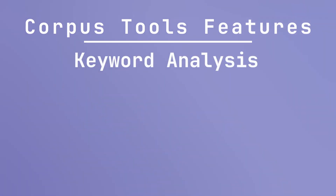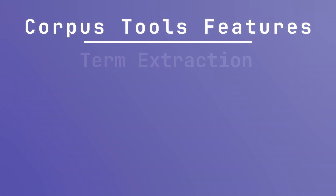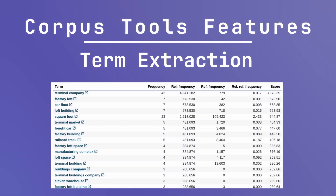Keyword analysis is useful for finding terms that are unusually frequent in a text compared to a reference corpus, which can be crucial in identifying key concepts and terminology in specialized texts. Term extraction is the process of extracting terminology from the text by analyzing the frequency and morphological features of the words and their usage in the given text.